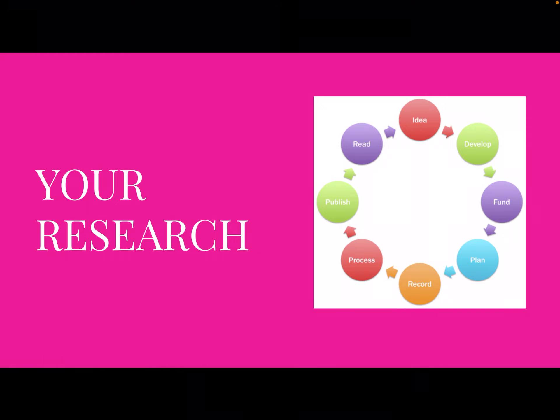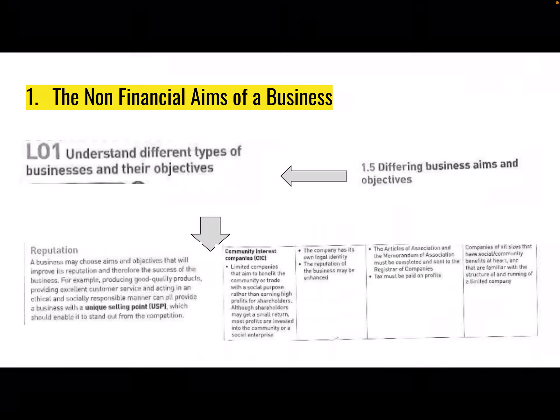The following section is for you to complete and hand in as a finished piece of work, which then becomes your revision document for the exam. The very first theme is the non-financial aims of a business. This comes from learning outcome one within the specification, which is understanding the different types of businesses and their objectives. I have added some information from the textbook to help you understand, and for this particular research theme we're going to focus on reputation and a community interest company.